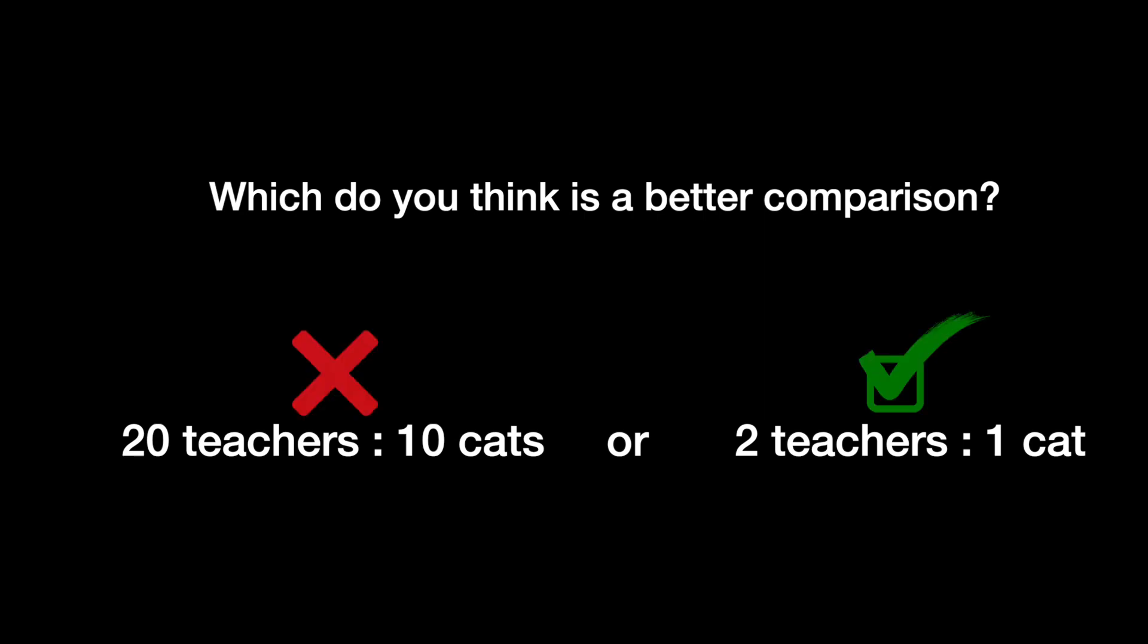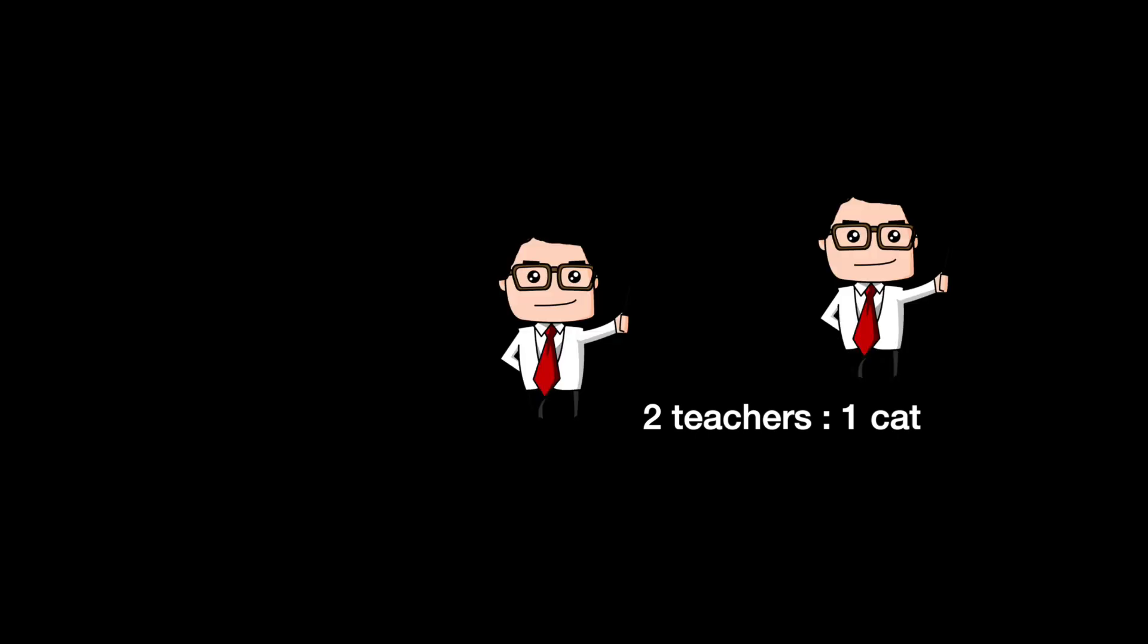The last one, 2 teachers to 1 cat, is better because it's easier to understand the relationship between the two quantities. For every 2 teachers you have, you also have 1 cat. You can imagine both teachers, maybe they share this cat together.